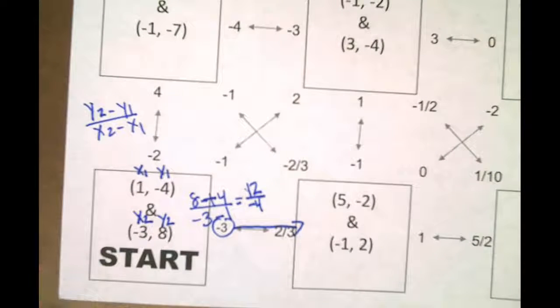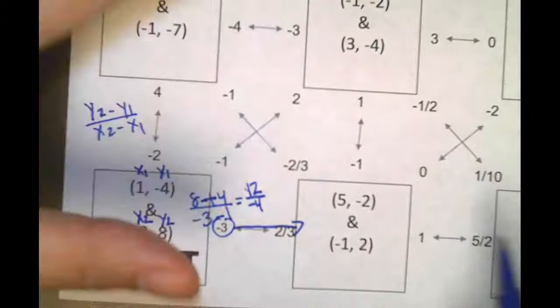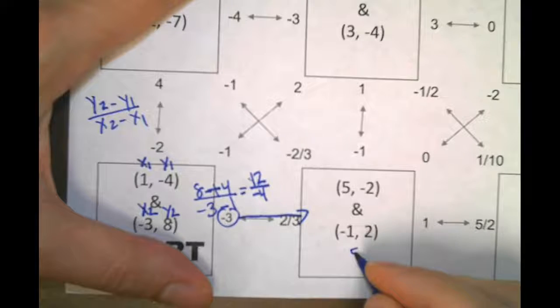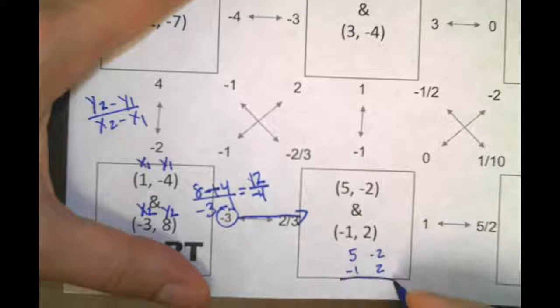Do you guys want to know the shortcut way to do this? Yes. Okay, shortcut way. We're going to have, I'm just rewriting this up here: 5, negative 2, negative 1, 2. Right?